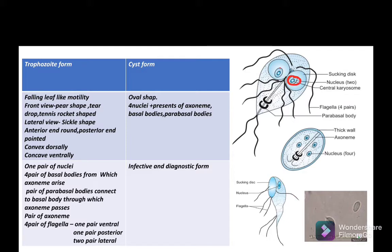The trophozoite has one pair of nuclei and four pairs of flagella — one pair at the anterior, one pair at the posterior, and two pairs laterally. It also has a pair of parabasal bodies through which a pair of axonemes are processed.